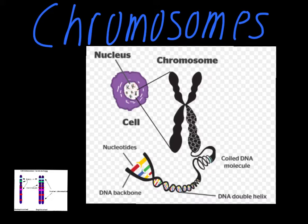So one of the first things that happen during the process of mitosis is that the DNA, which is usually all coiled up, ends up condensing down into these little X-like structures. Depending on the species, there's going to be a different number of chromosomes. For example, for people, you have 46 chromosomes — you get 23 from mom and 23 from dad.